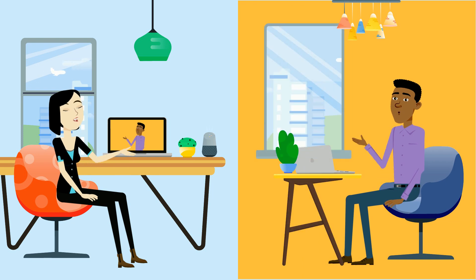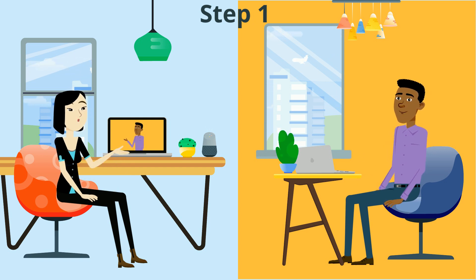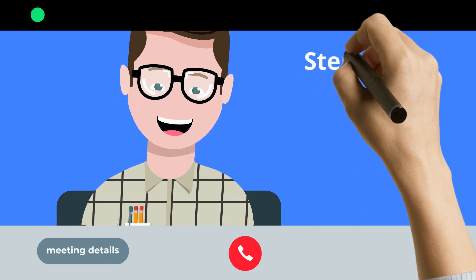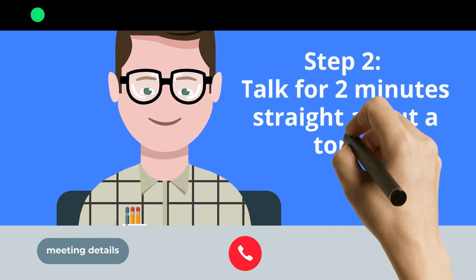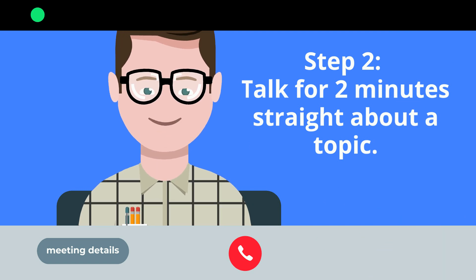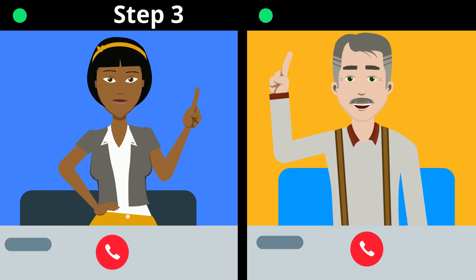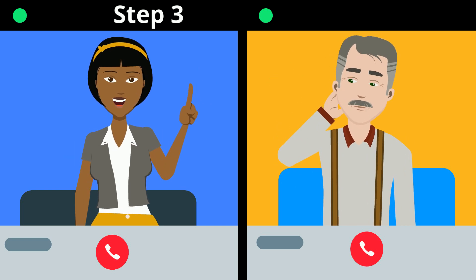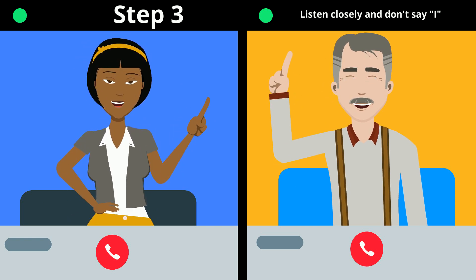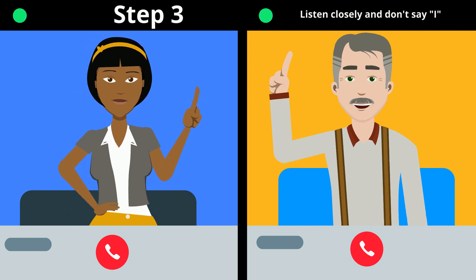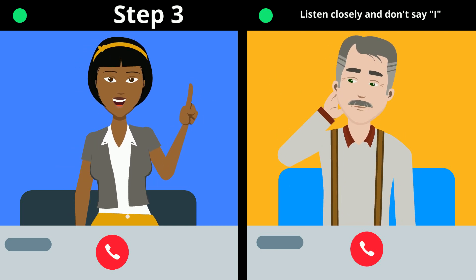Step one: divide teams into individual groups. Zoom has the function to individually break out teams, or if you use Google Hangouts, you can use individual links that you pre-created. The next step: one person should be chosen as the talker and the rest of the group should listen. The talker should talk two minutes straight without stopping. Step three: the talker cannot use the word 'I' at any time. If they do, the listeners must raise their hands and the session ends. Then they choose another person or reverse roles. The group that can get to two minutes the most times wins.